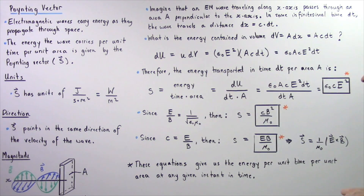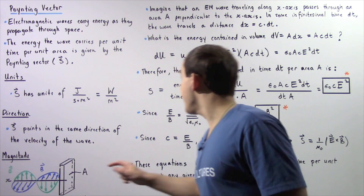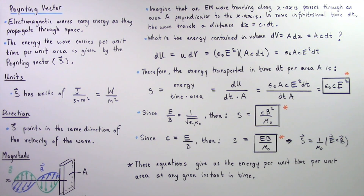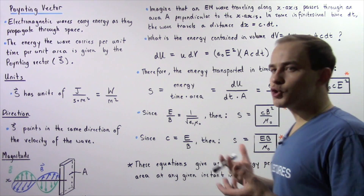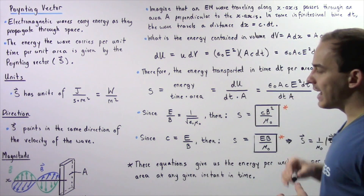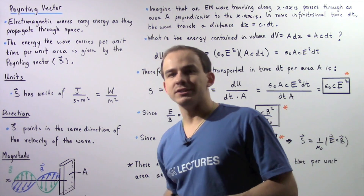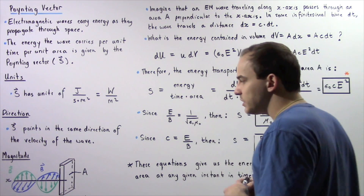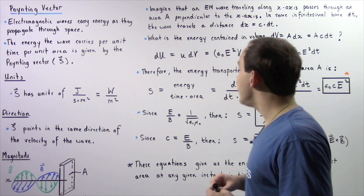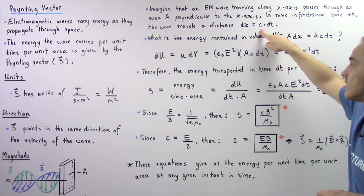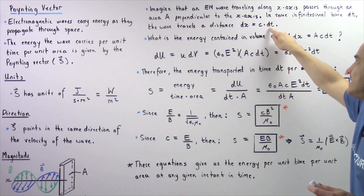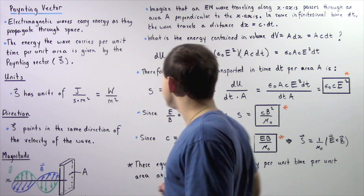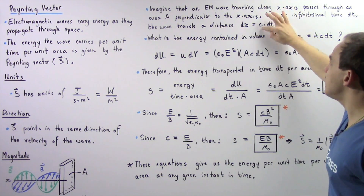Imagine this electromagnetic wave traveling along the x-axis and passing through an area A that is perpendicular to the x-axis. In some infinitely small time period dt, the wave travels an infinitely small distance dx. To find dx, we multiply the speed of the propagating wave, given by c, the speed of electromagnetic radiation, by dt. So speed multiplied by time gives us the distance.